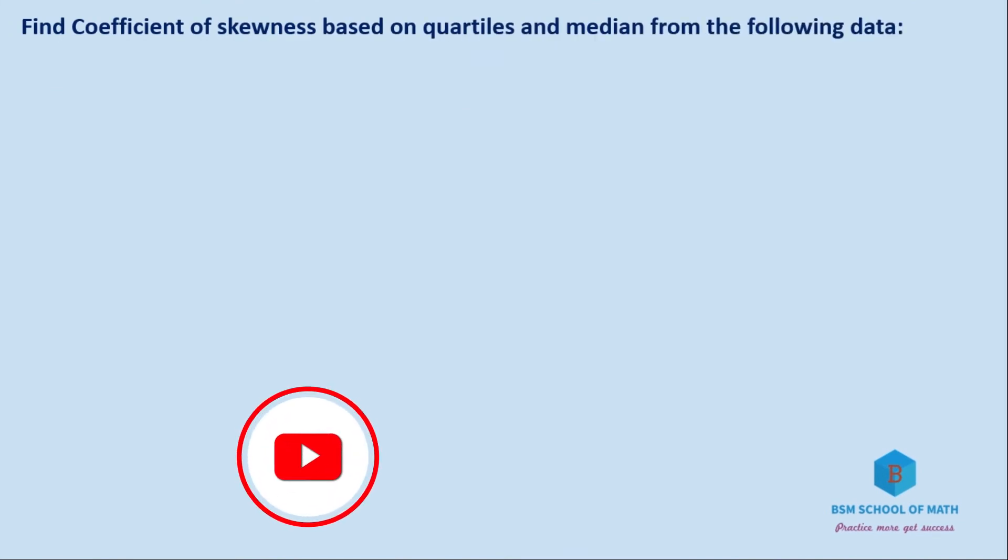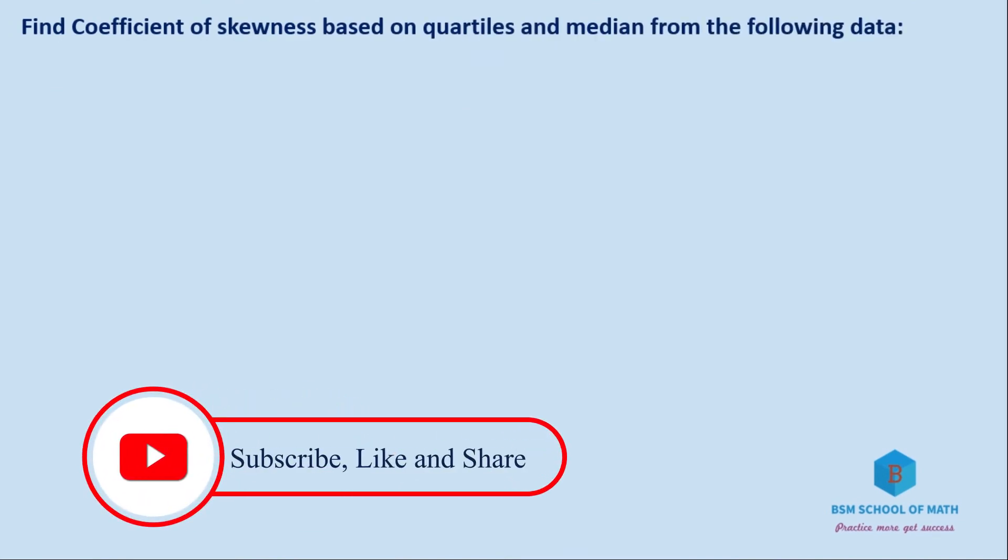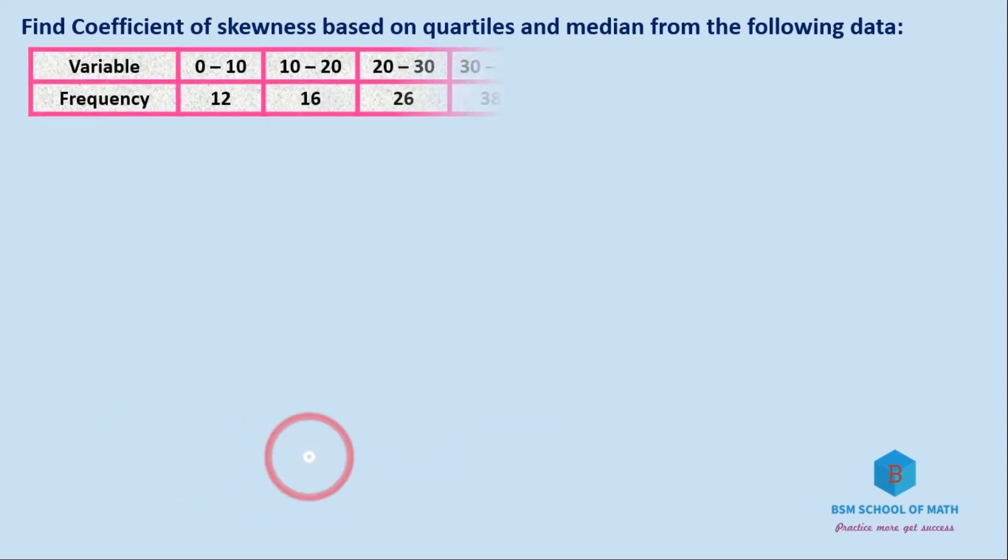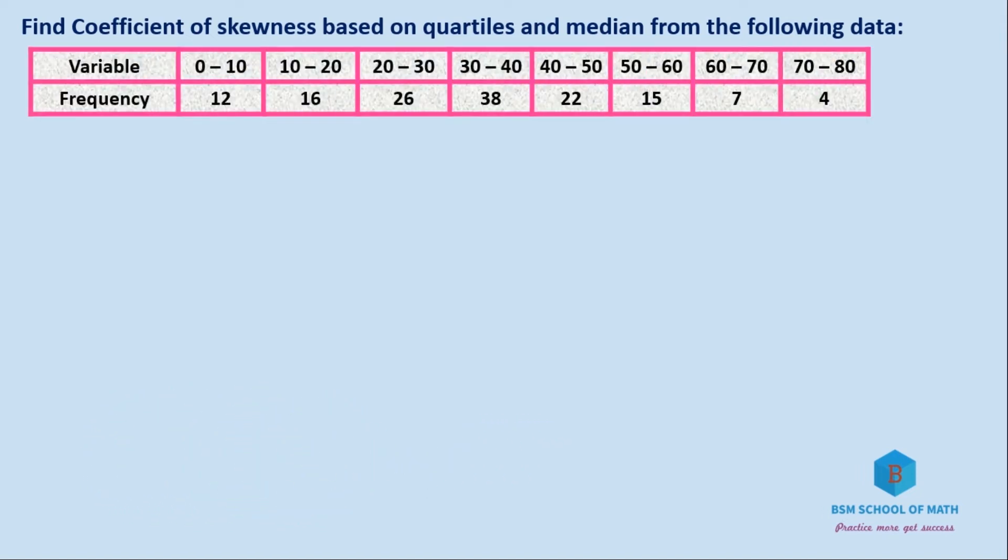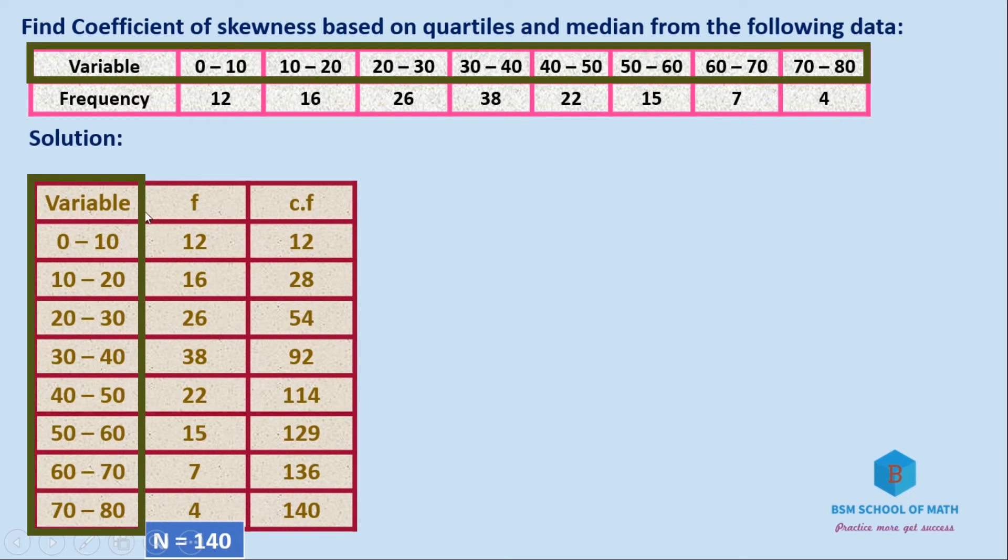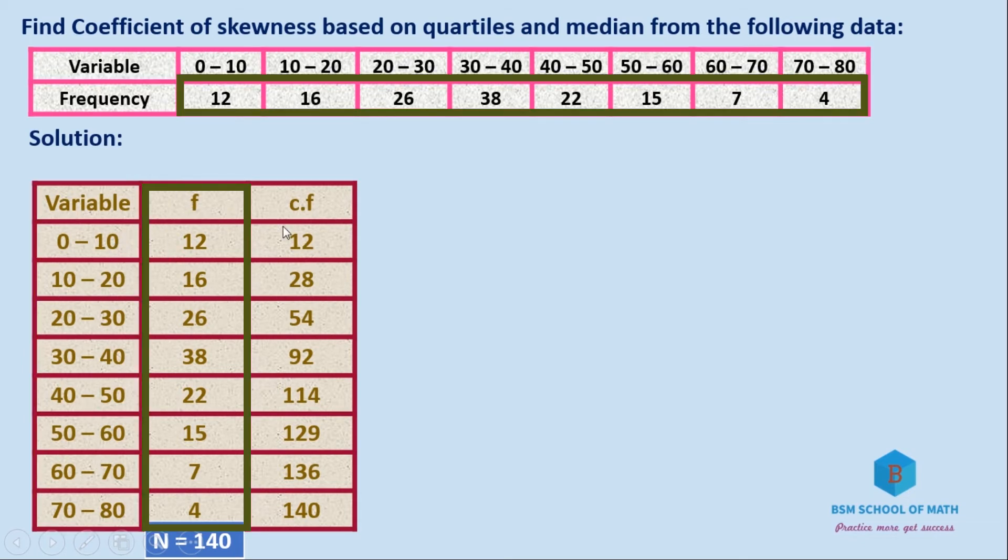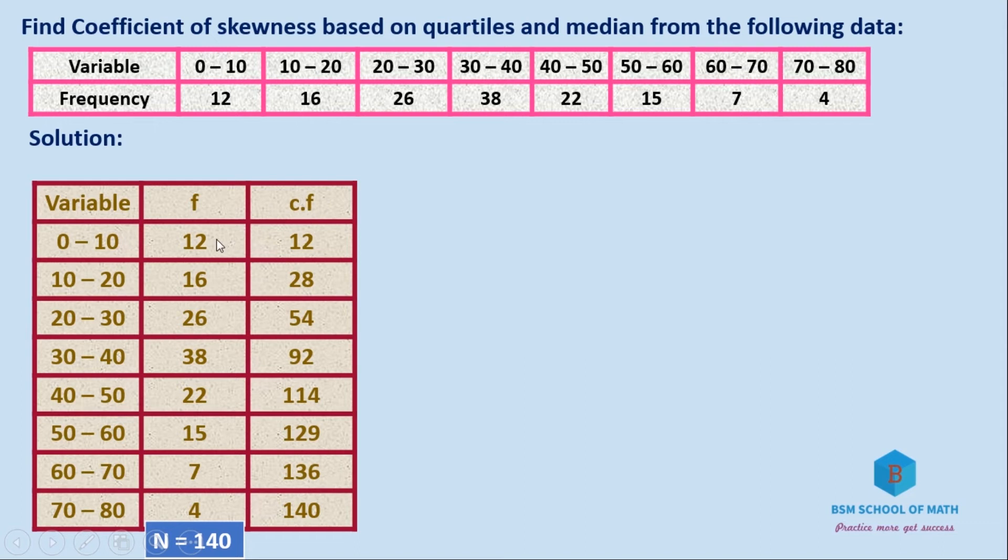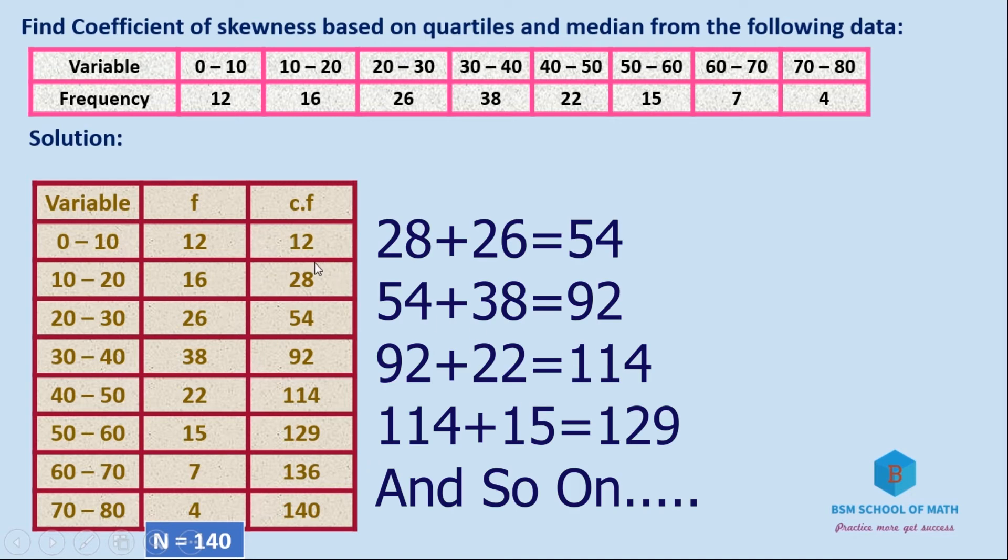Next problem: Find coefficient of skewness based on quartiles and median from the following data. We have variables with frequency ranges: 0-10 has frequency 12, 10-20 has 16, 20-30 has 26, 30-40 has 38, 40-50 has 22, 50-60 has 15, 60-70 has 7, and 70-80 has 4. First calculate cumulative frequency by adding.